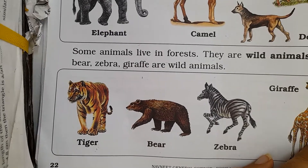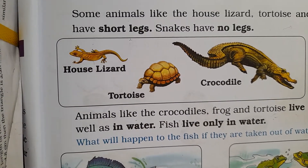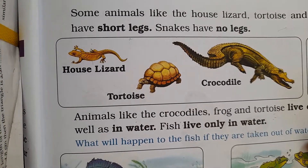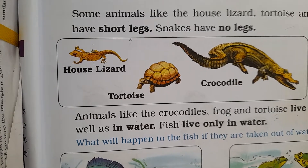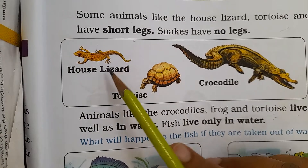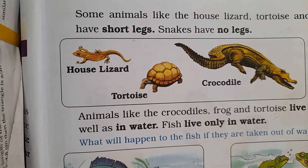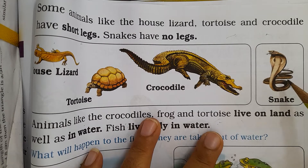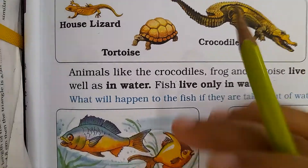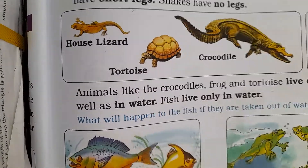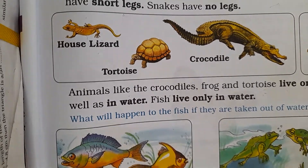Next, there are animals such as house lizards, tortoises, and crocodiles. They have short legs. Snakes have no legs and crawl on the ground. Animals like crocodiles, frogs, and tortoises live on land as well as in water.